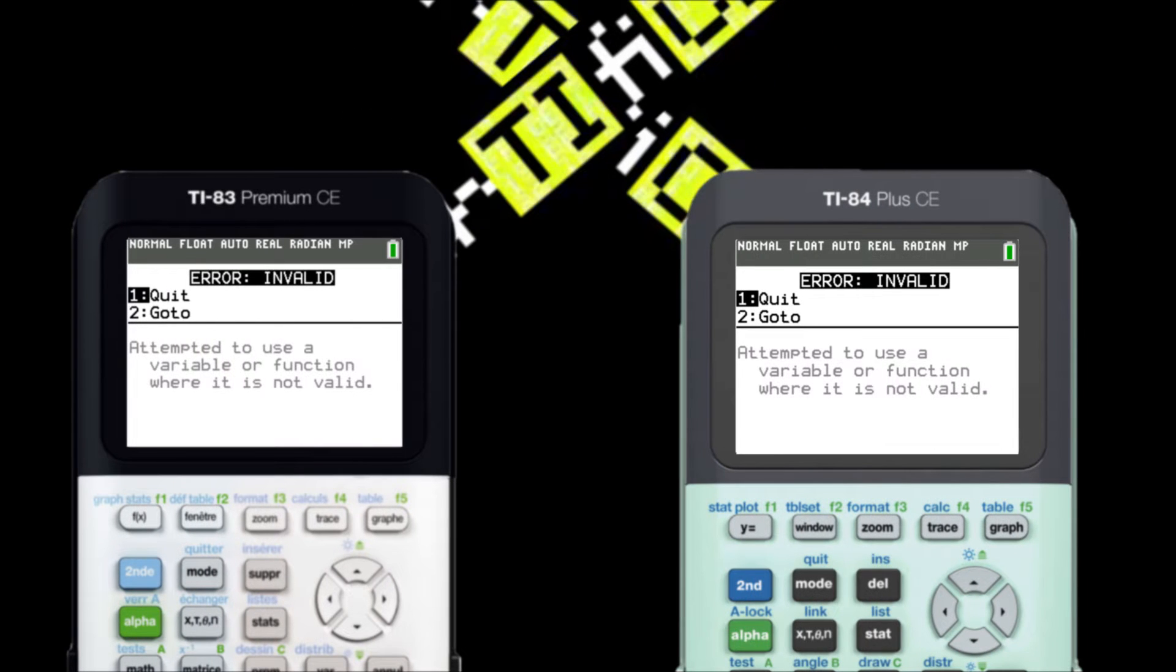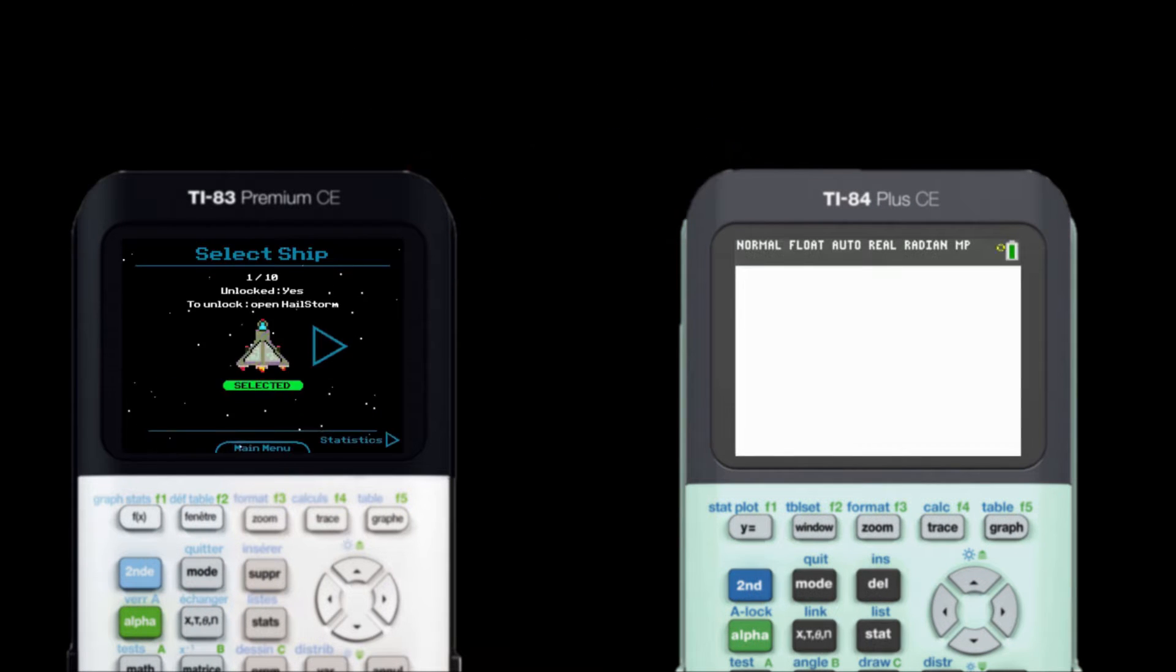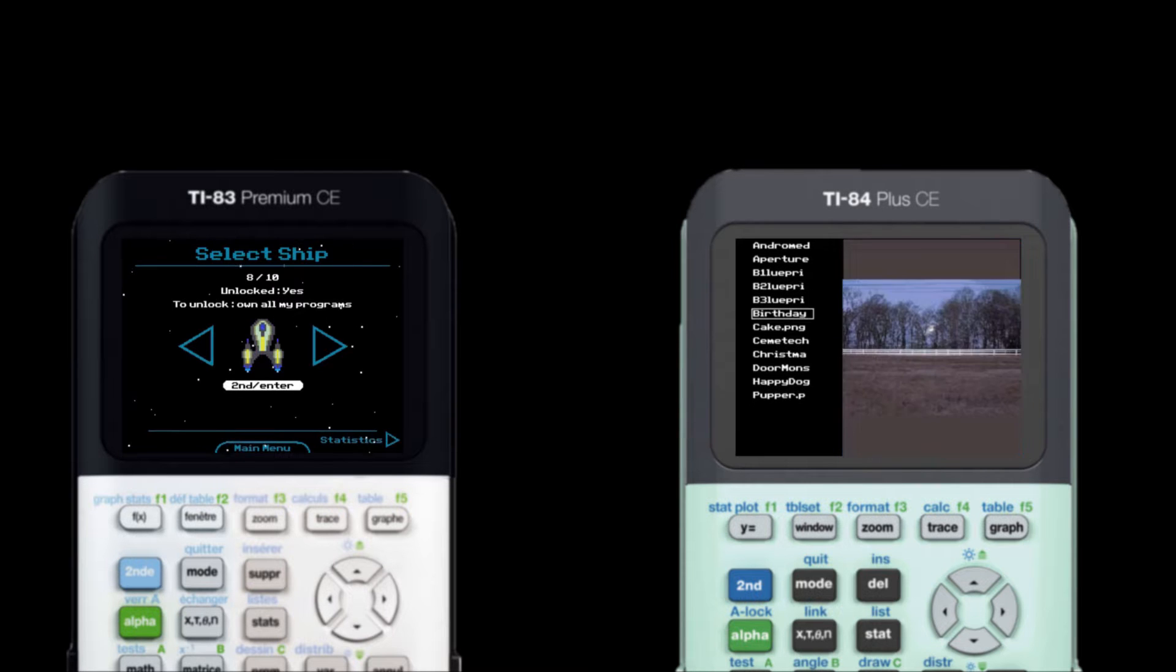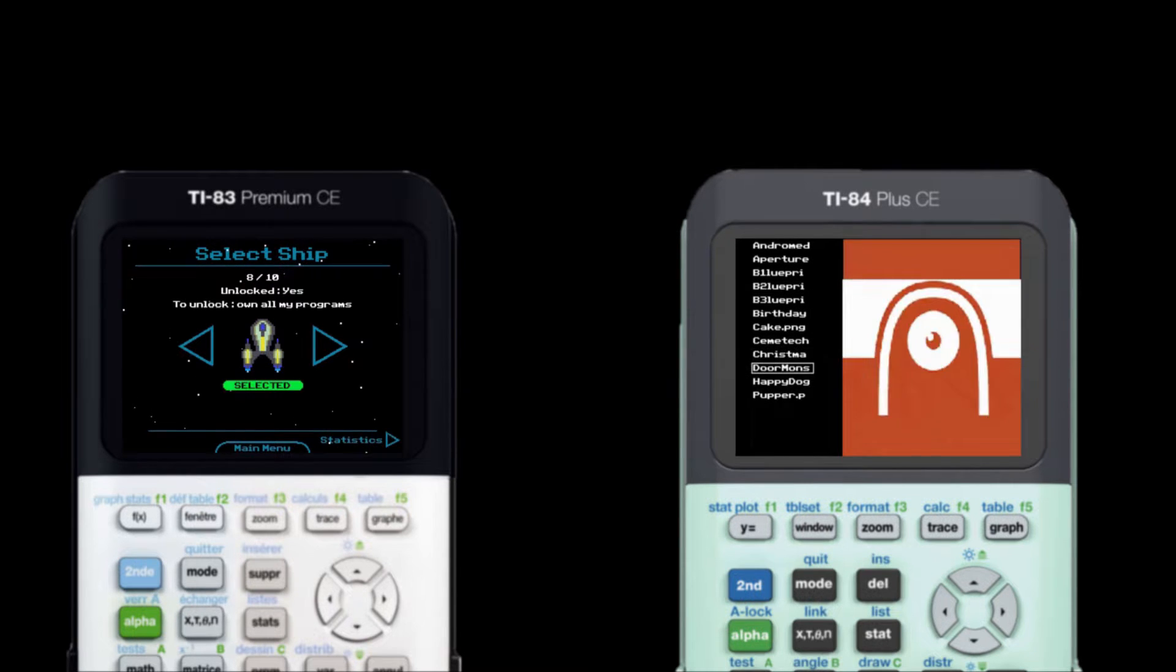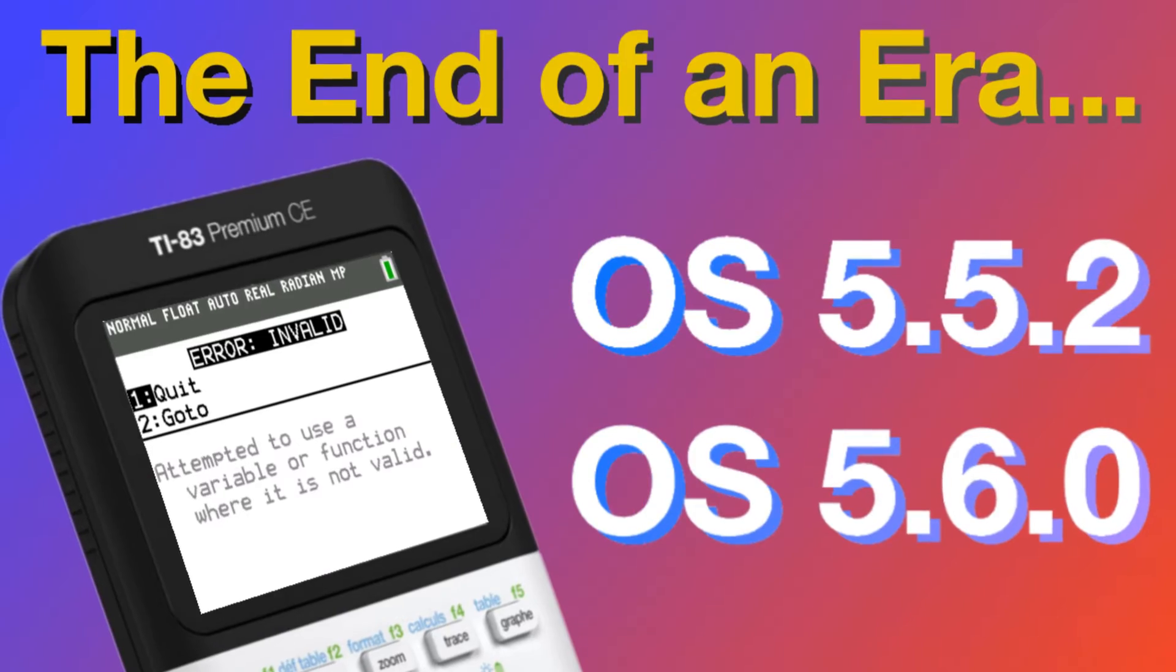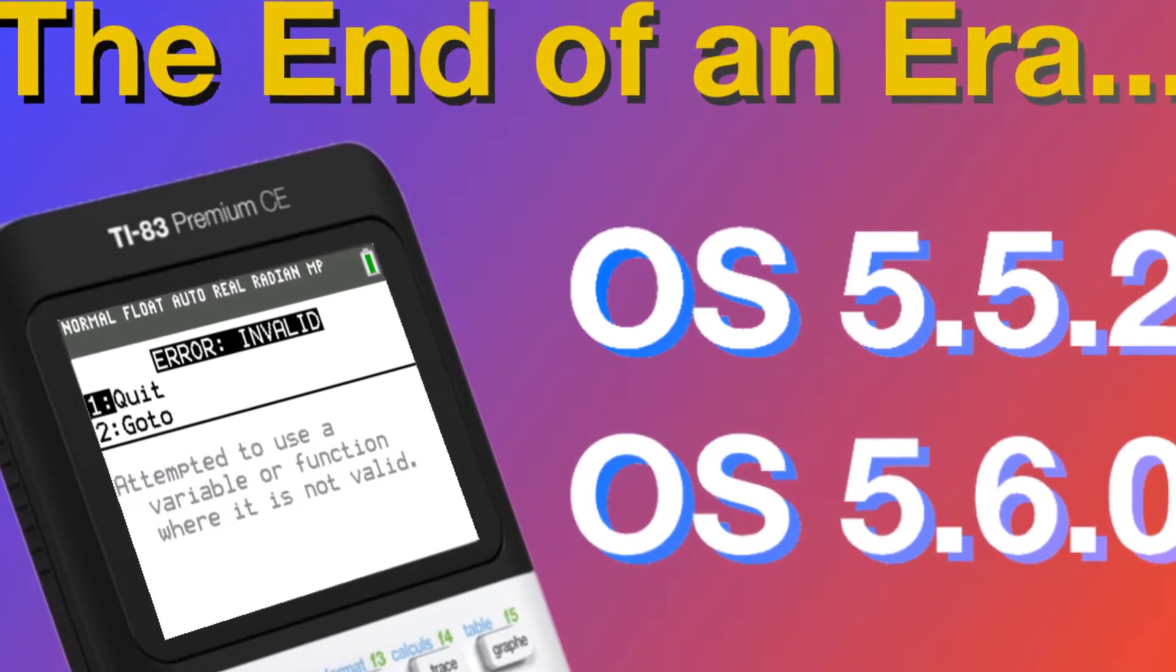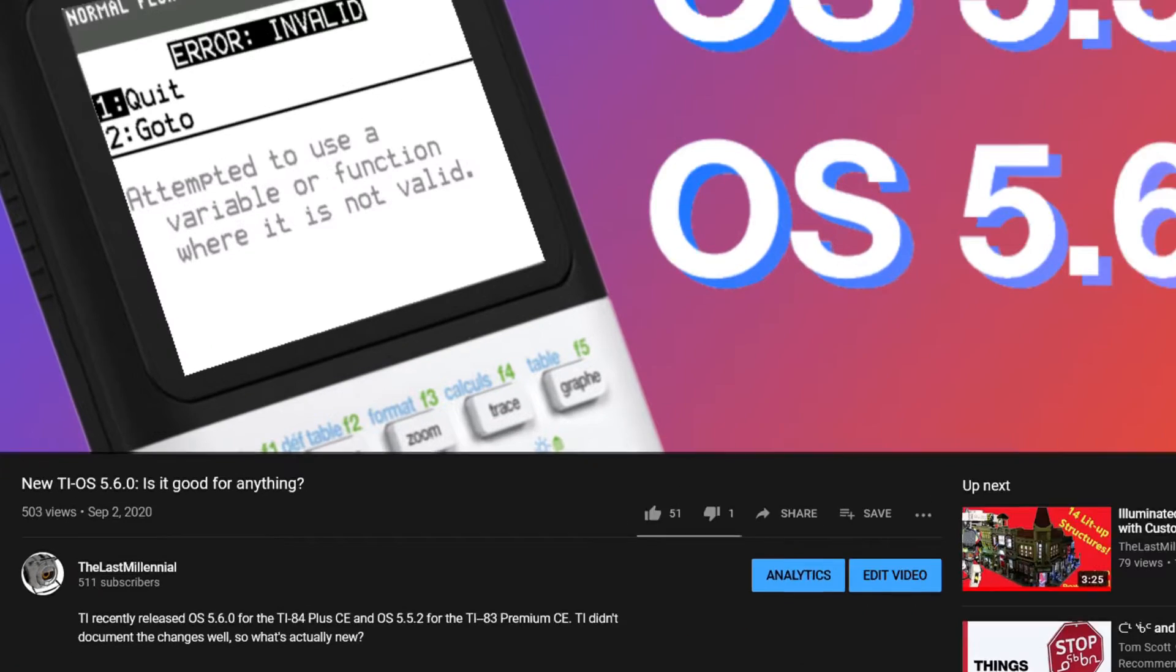This means you will be able to run assembly programs and games on OS 5.5 and above. Not only that, but you'll most likely be able to downgrade if you want. For some context if you missed the news, TI has officially removed assembly support since OS 5.5 without solid basis. It didn't take long for the community to get it back though.